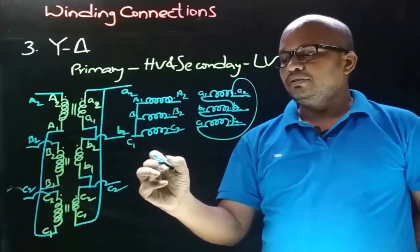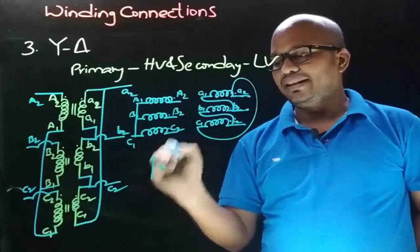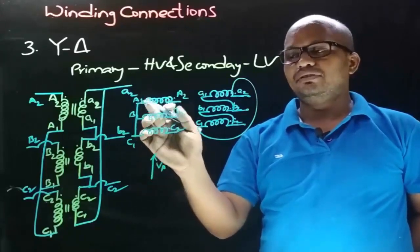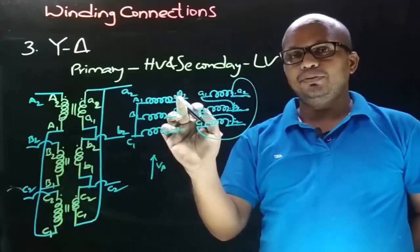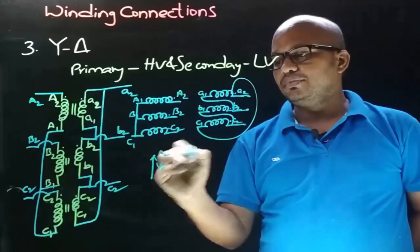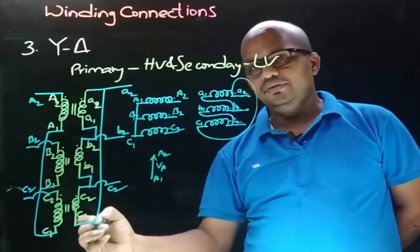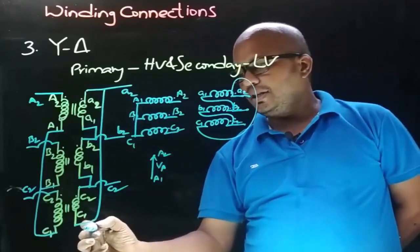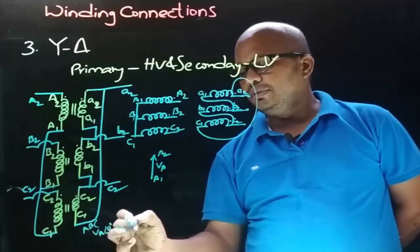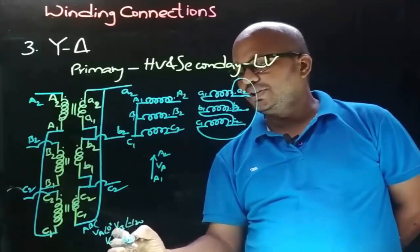Let's consider the primary side star-connected VA phasor. The terminals of VA are A1 and A2, and the connection is taken from the dot end, that is A2, so the arrow will point towards A2 and the other end will be A1. In a three-phase balanced ABC system, if VA is at angle 0°, then VB will be at angle -120° and VC will be at angle 240° from VA.